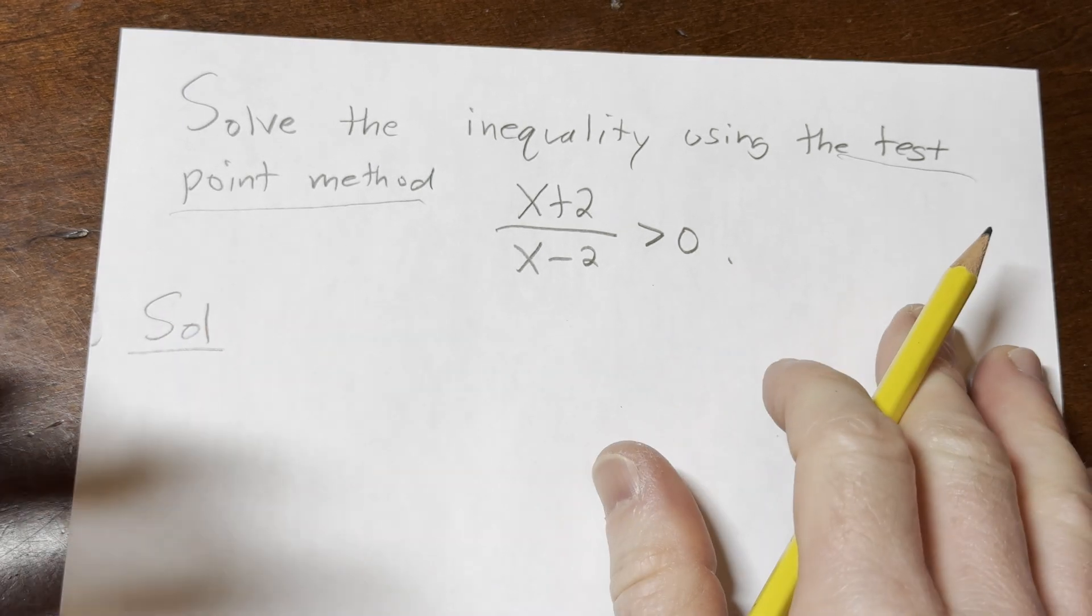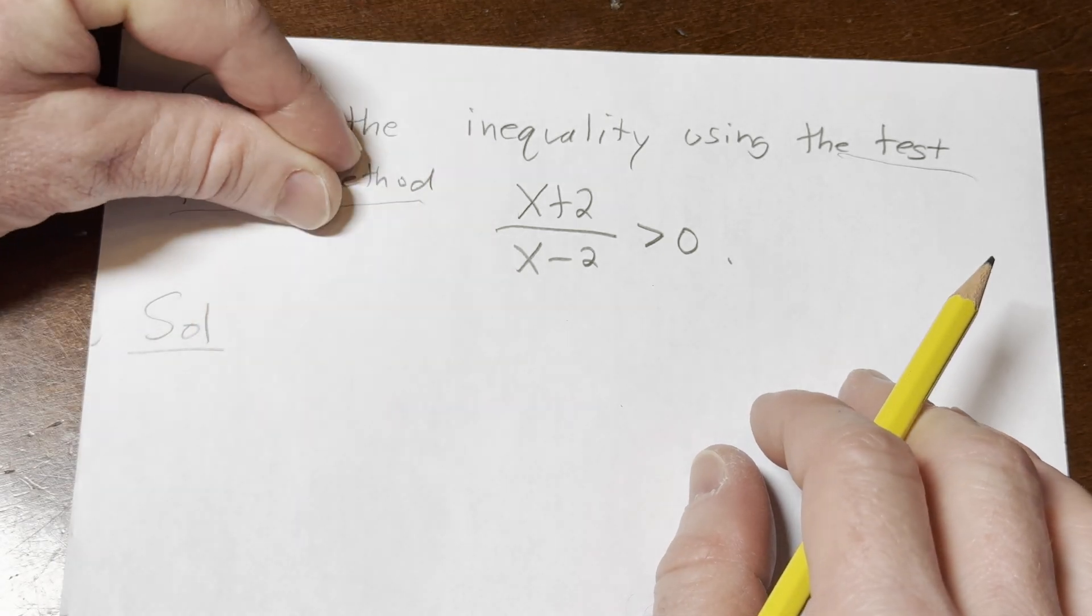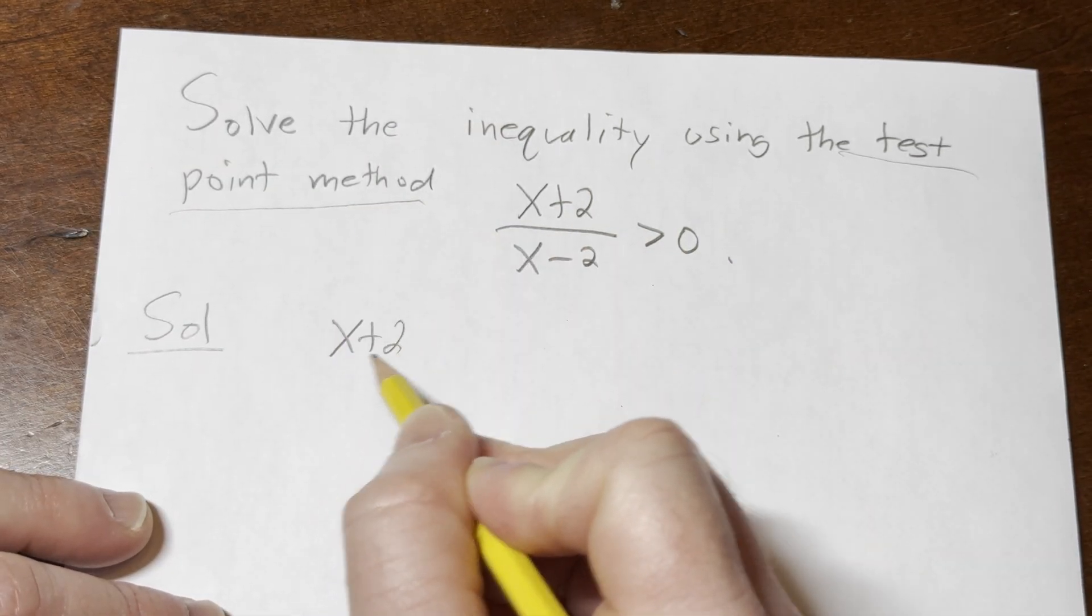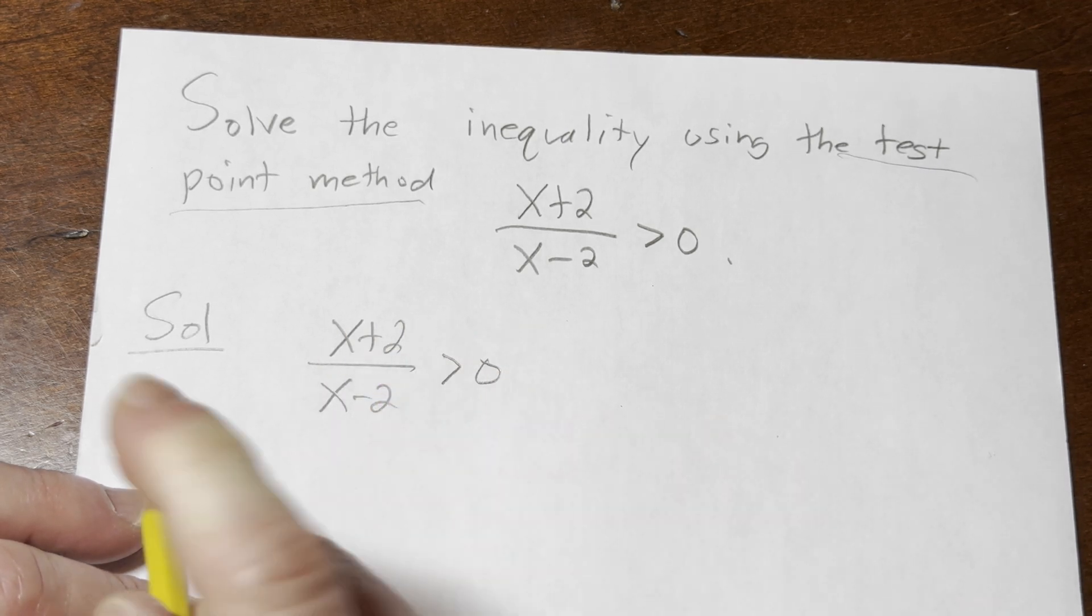Solution. Okay, so the test point method basically says that the first step is to have a single term on one side and zero on the other. So we're already there. We have (x+2)/(x-2) > 0. Right, we have a single term here and then here we have zero.